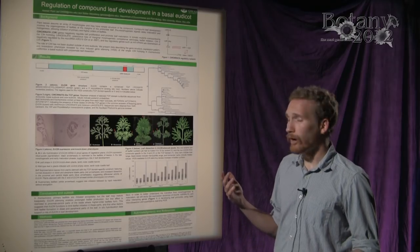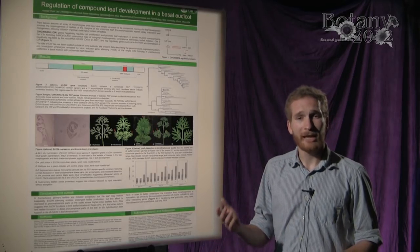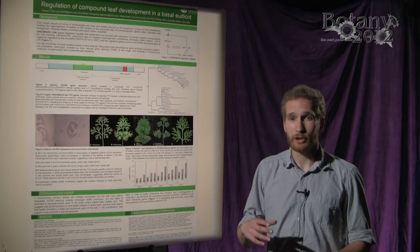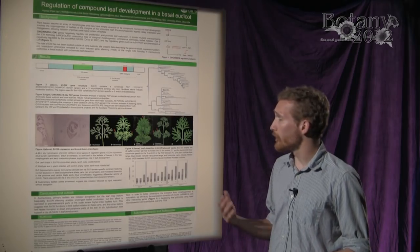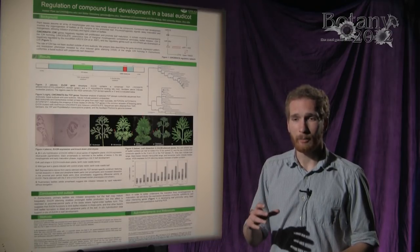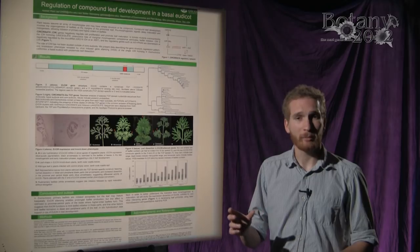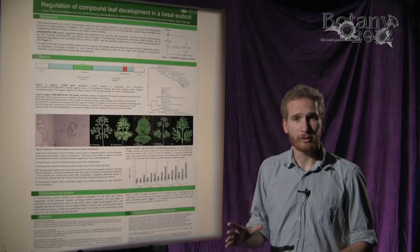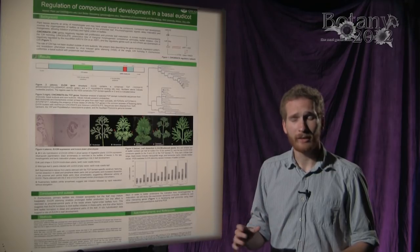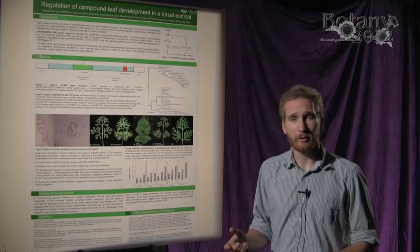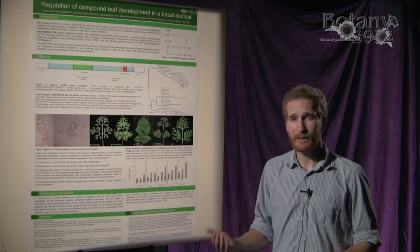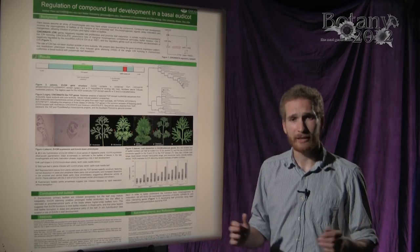These genes are cell cycle regulators, and they have been implicated in leaf development and surface curvature in leaves. What I have done is to use both my own cloning and 3' RACE work to obtain sequence data for a homologous copy of this gene in Eschscholzia. I have also used database sequences from the 1KP project and the phytometasyn project to complete this sequence.